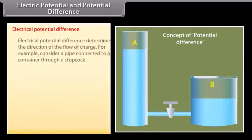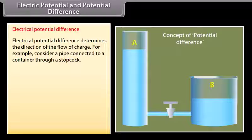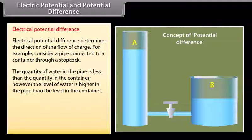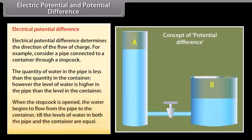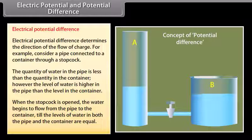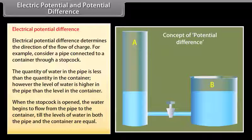Electrical potential difference determines the direction of the flow of charge. For example, consider a pipe connected to a container through a stop cork. The quantity of water in the pipe is less than the quantity in the container; however, the level of water is higher in the pipe than in the container. When the stop cork is opened, water flows from the pipe to the container until the levels are equal. It is the potential difference that is responsible for the direction of flow.